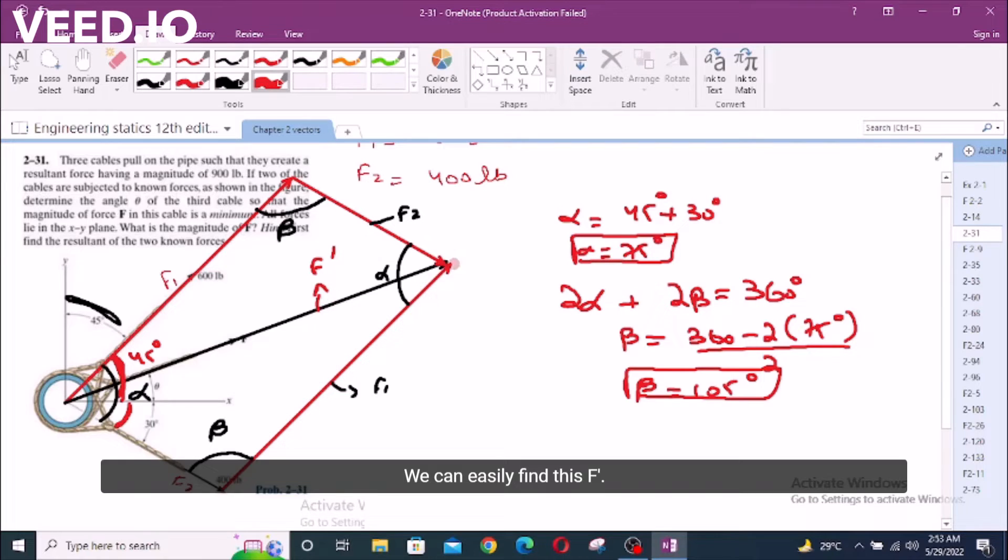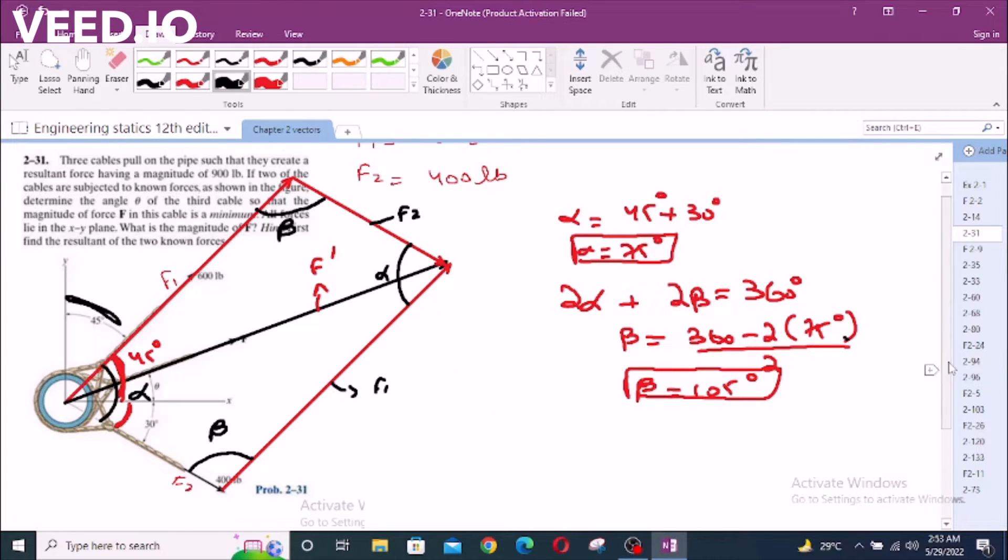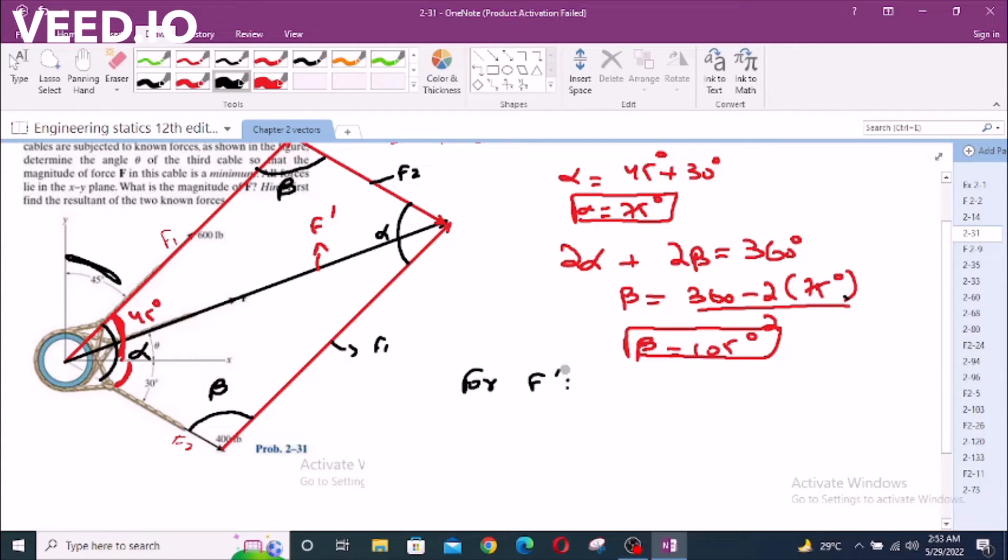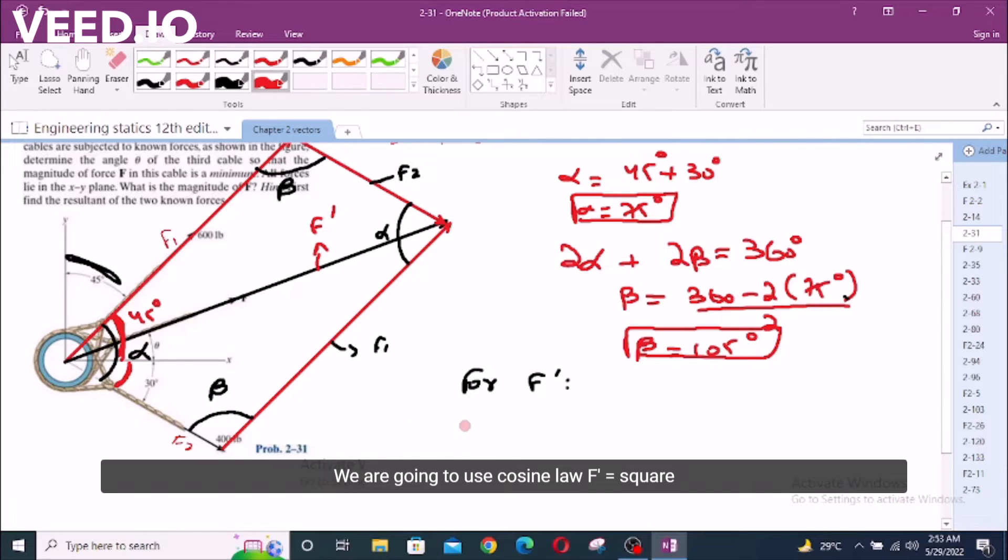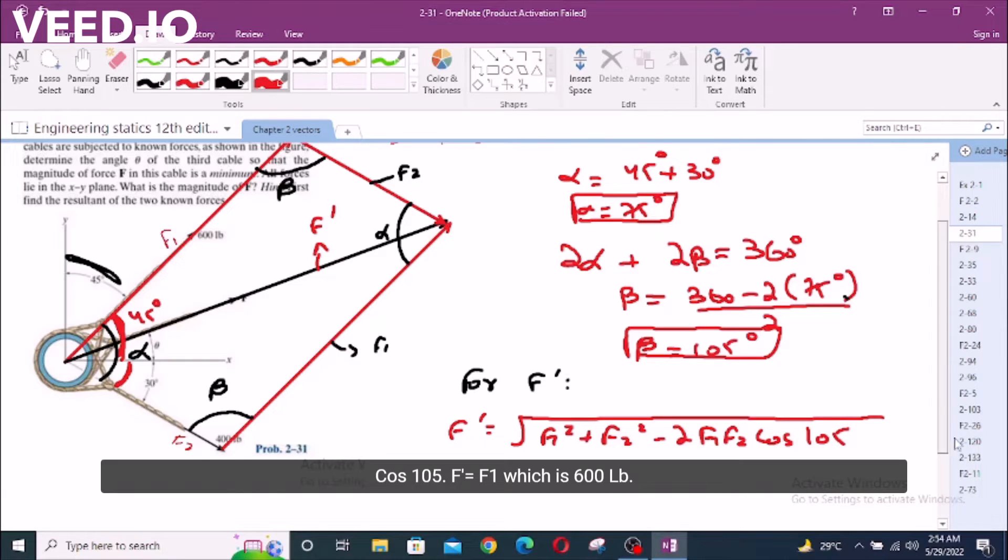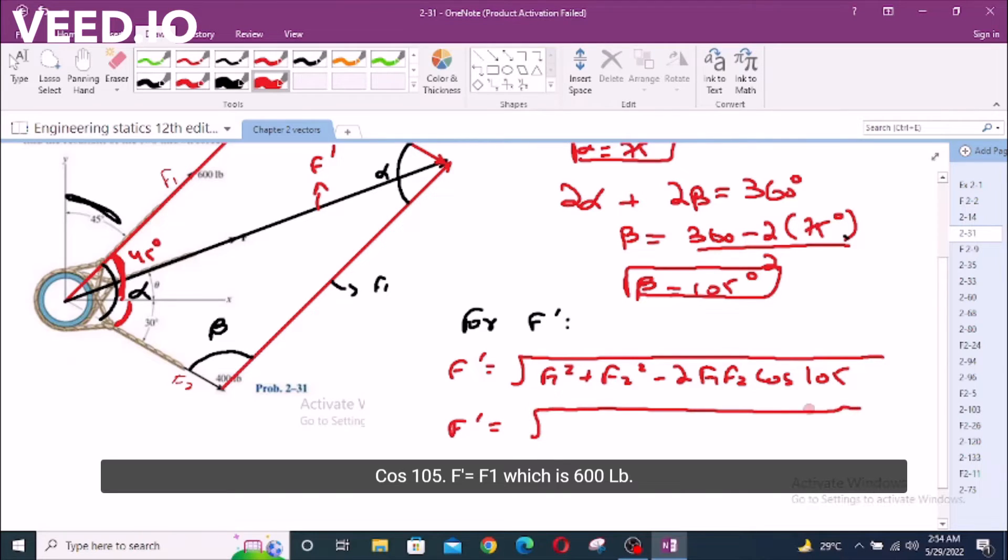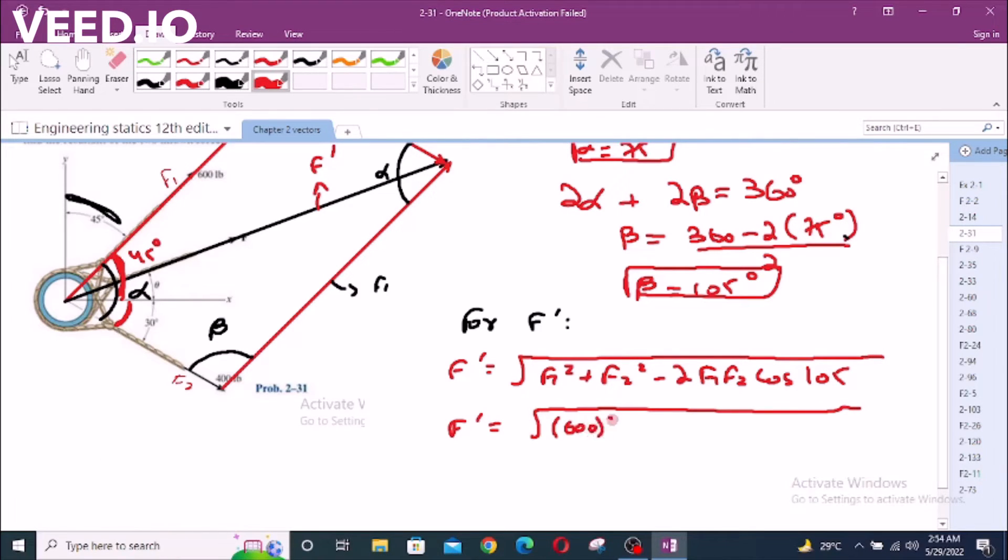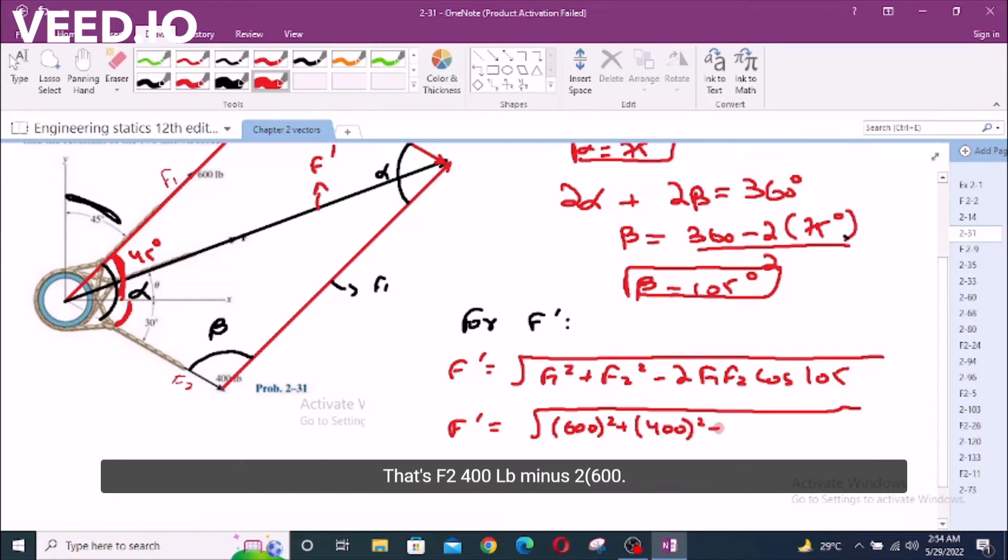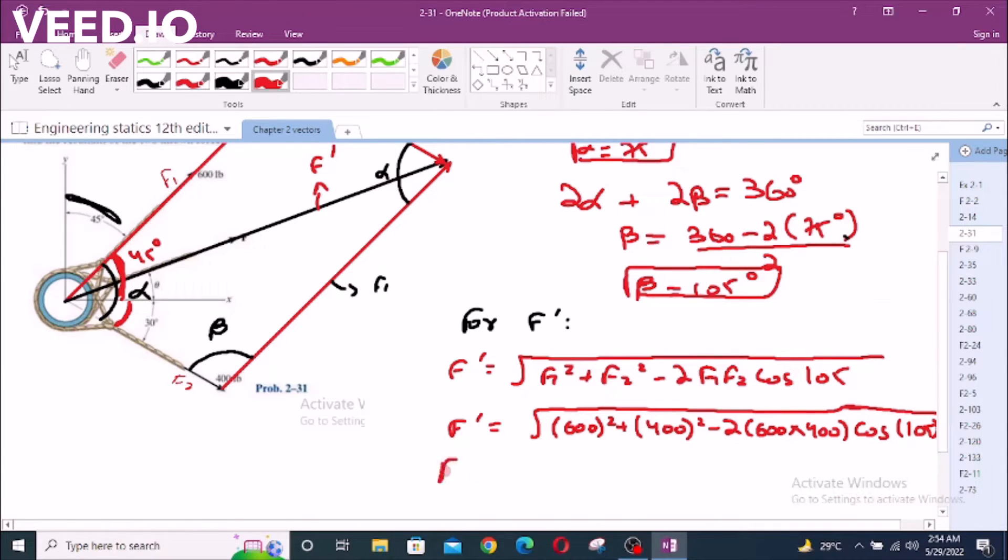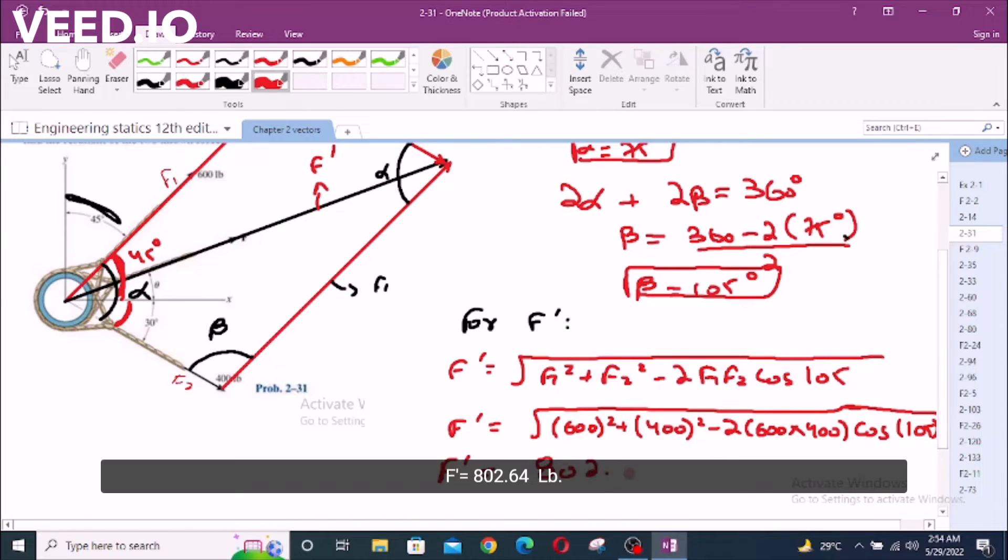We can easily find this F prime. We are going to use cosine law. F prime equals square root of F1 squared plus F2 squared minus 2 times F1 F2 cosine beta. That's 600 squared plus 400 squared minus 2 times 600 times 400 cos 105 degrees. F prime equals 802.64 Lb.